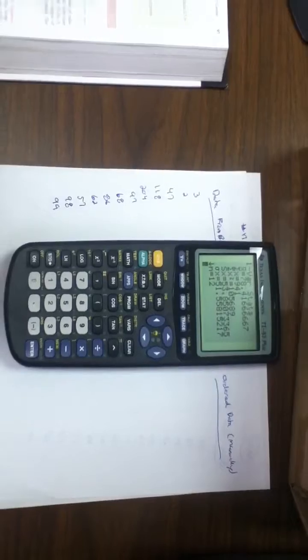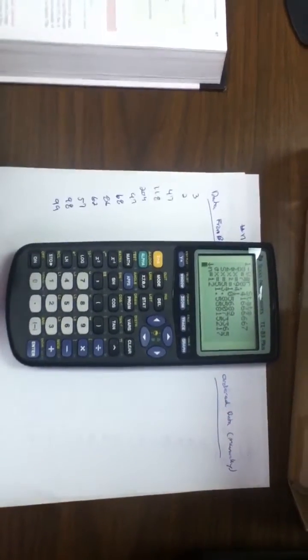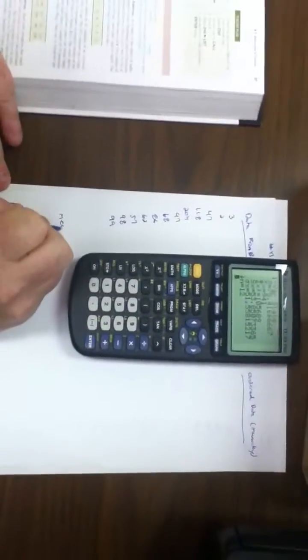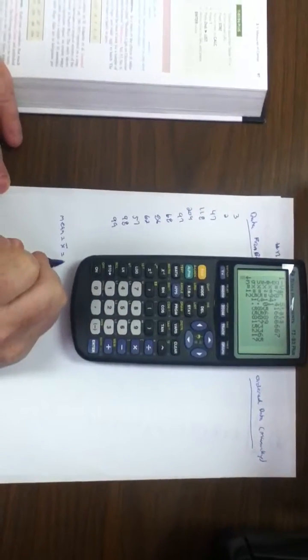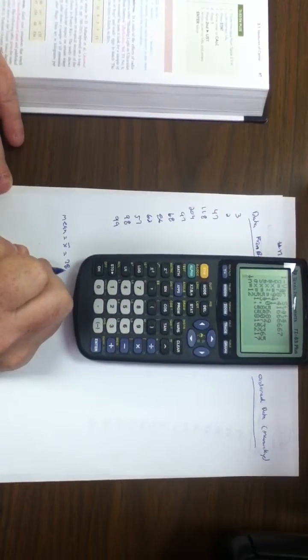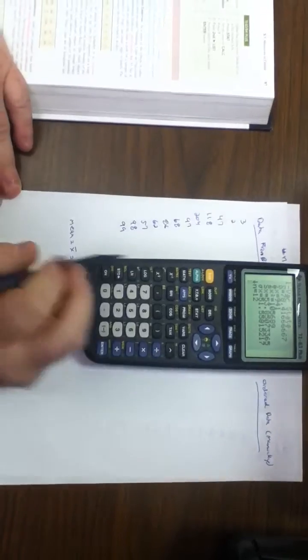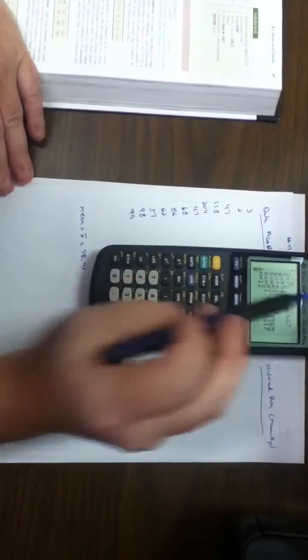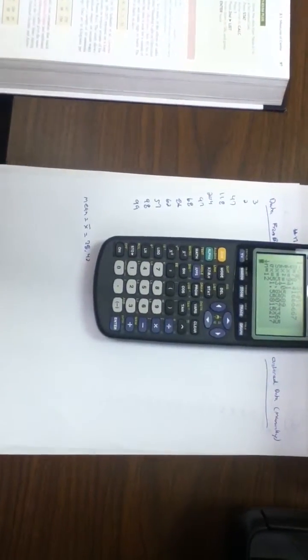X bar, which is your mean, is your first one. Mean equals X bar. In this case, I'm going to round this to 78.42. Sum of X, sigma of X, is the sum of the X values. In this case, it's 941.